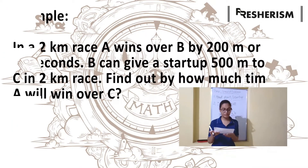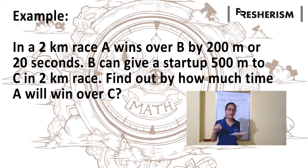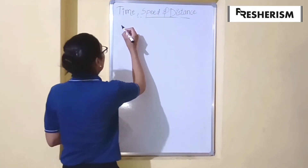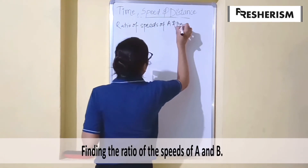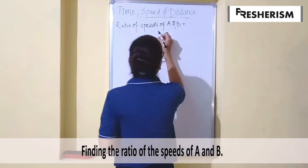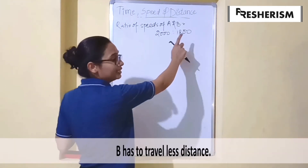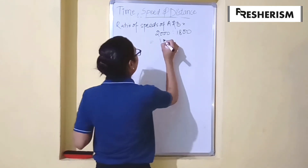Let us discuss a question. In a 2 kilometers race, A wins over B by 200 meters or 20 seconds. B can give a start up of 500 meters to C in a 2 kilometer race. The ratio of speed of A and B will be equal to 2000 ratio 1800, as B had to travel 200 meters less, which is further equal to 10 ratio 9.